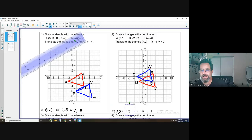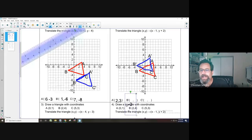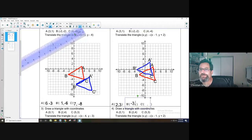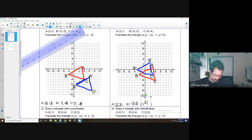I'm going to do this one. B: negative two minus one is negative three. And then negative two plus two is zero. And then over here, my C: four minus one is three, and negative four plus two is negative two.